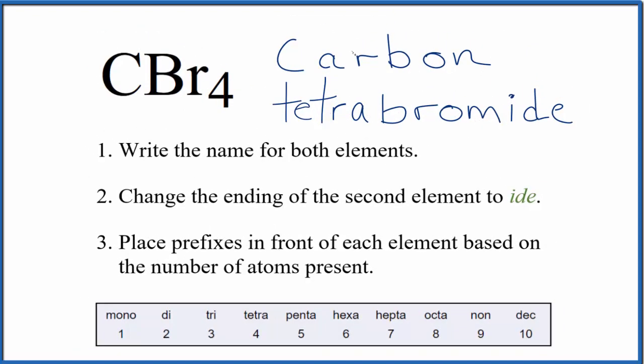If you're given this name and asked to write the formula, you know you have one carbon and then tetra, which means four bromine atoms.